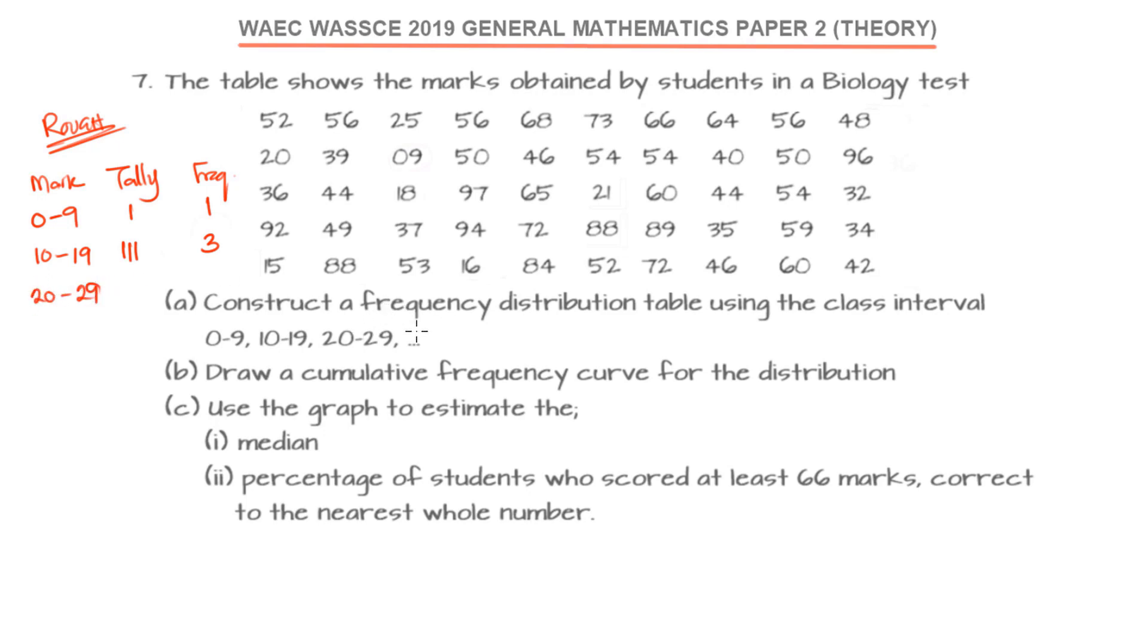Now, 20 to 29. We are going to look in the first row, we have 25, that's 1. Second row, we have 20, that's 2. If we still continue, the third row, we have 21, that's 3. The fourth row, we don't have any. So the frequency is 3.